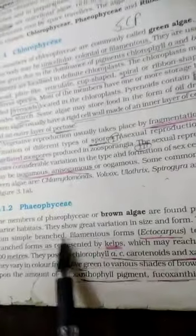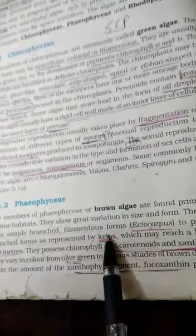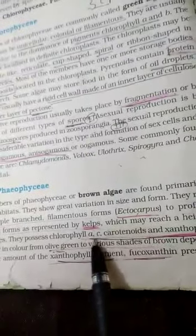And these brown algae are branched and filamentous. Example is Ectocarpus, and they are commonly called sea kelps. Their main pigment is chlorophyll A and C.